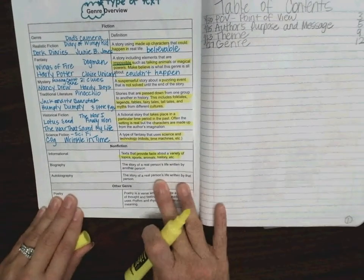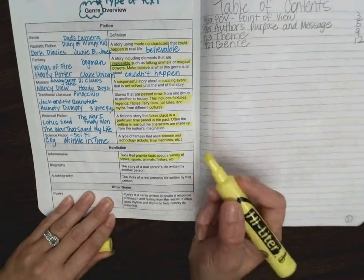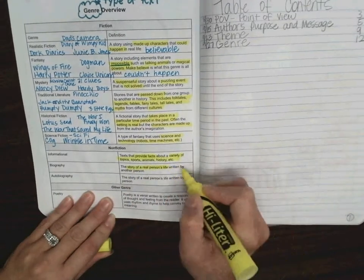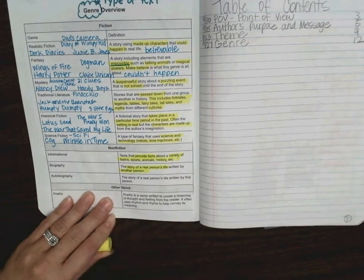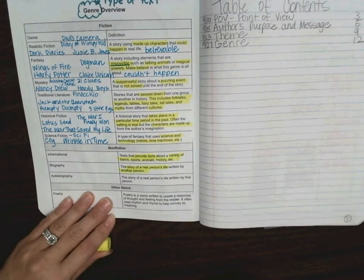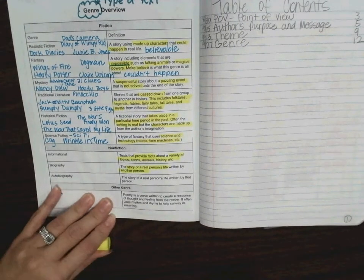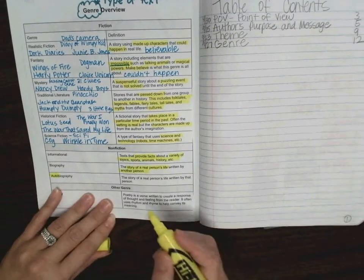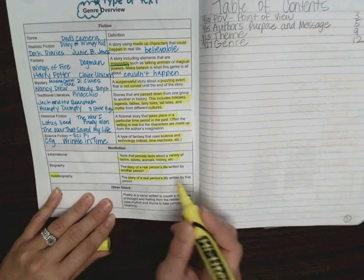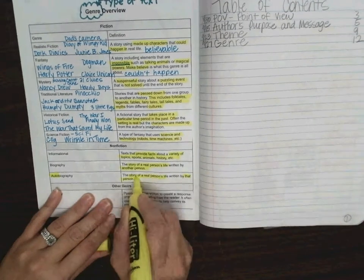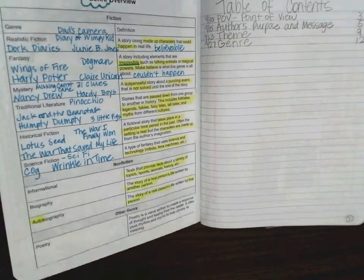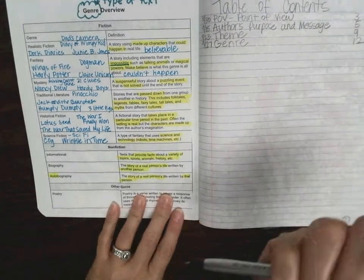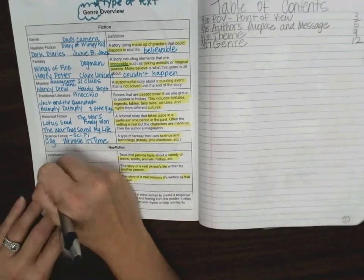Now, biography is the story of a real person's life written by another person. An autobiography, the key word is here, auto, is the story of a real person's life written by that person. Because auto refers to self. So auto's kind of referring to self.